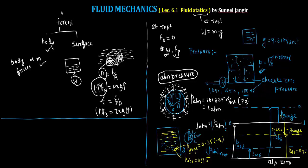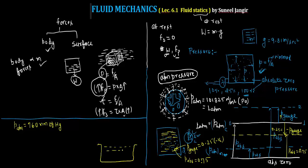There is one more convention: atmospheric pressure can also be written as 760 mm of Hg (mercury). To understand this, consider an experiment: there is a jar or container filled with mercury, and a tube is placed in it with an opening at the top.